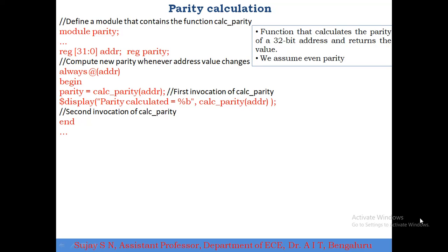Here the module is named 'parity'. We have a register of 31 bits down to 0, which is the address — so the address is 32 bits — and one more register of one bit that is parity. In the always block triggered by address, parity is assigned as calc_parity of address. Here 'parity' is the output variable, 'calc_parity' is the function that calculates the parity for this particular address, and I am going to display the parity calculated using this function for this particular address.